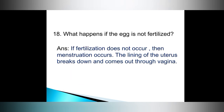Question number eighteen: what happens if the egg is not fertilized? Answer: if fertilization doesn't occur, then menstruation occurs. The lining of the uterus breaks down and comes out through the vagina.